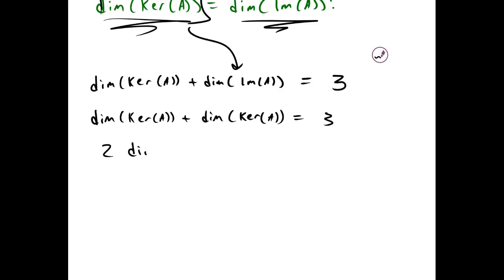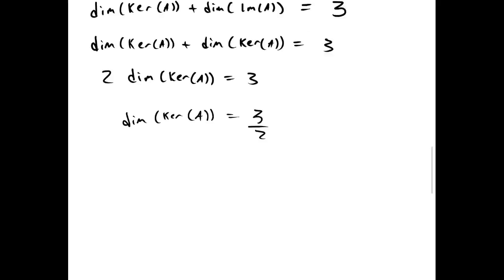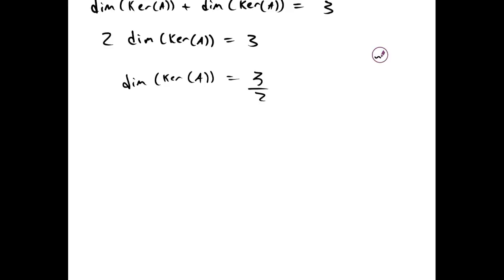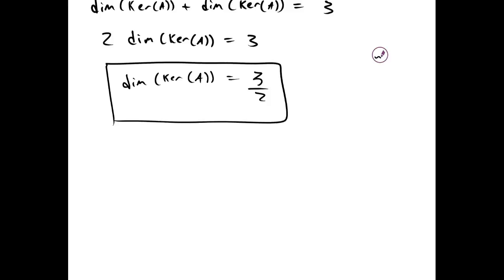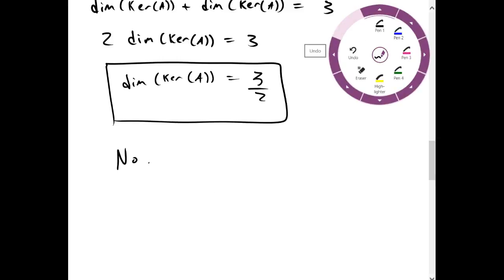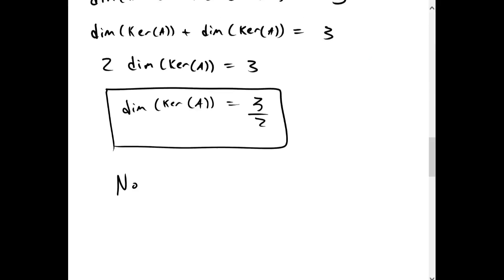This gives us 2 times the dimension of the kernel equals 3. Solving for the dimension of the kernel, we get 3 halves. Since dimensions have to be whole numbers, this doesn't make any sense — you can't have 3 halves of a dimension. So the answer is no. The dimension of the kernel and the dimension of the image can only be equal if the dimension of the domain space is an even number, because an even number divided by 2 will be a whole number.